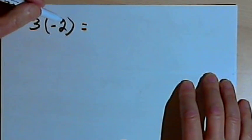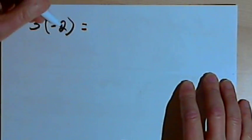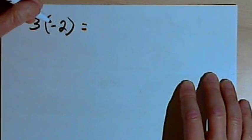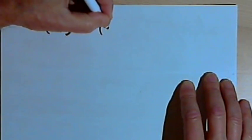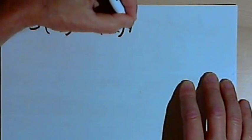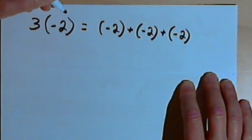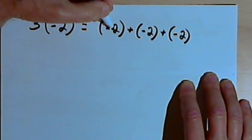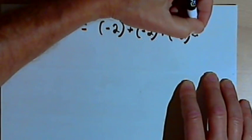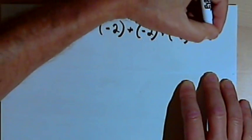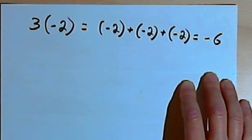So here I've got 3 times negative 2, and this is a multiplication problem. I'm going to think of it as repeated addition, since we can think of multiplication as repeated addition. So this would mean that I have a negative 2, plus a negative 2, plus another negative 2. So I'm starting from zero and I'm adding these three negative 2s, and with the rules I have for adding positive and negative numbers, I know that's going to add up to negative 6.